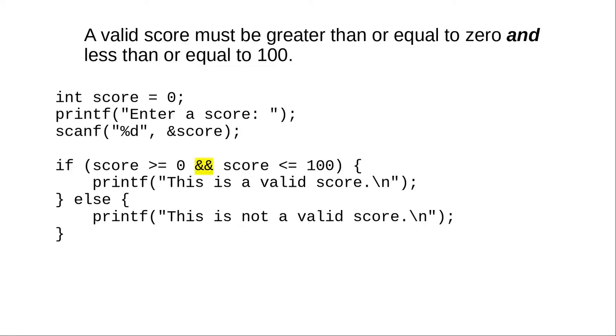The AND is written with two ampersands in a row. For an AND operation to be true, both of its operands must be true.